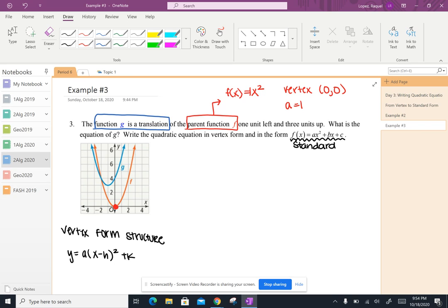So then the next thing that we have to unpack is that g is translated one unit to the left and three units up from the vertex (0, 0). So if I'm moving from (0, 0) to 1 unit to the left and three units up,